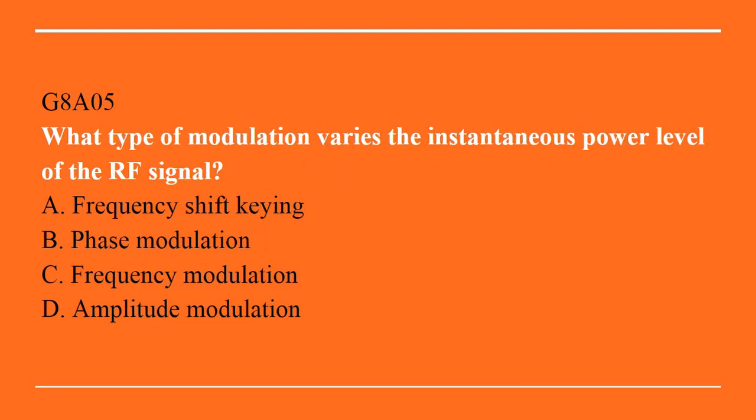G8A05: What type of modulation varies the instantaneous power level of the RF signal? A. Frequency shift keying. B. Phase modulation. C. Frequency modulation. D. Amplitude modulation. Answer is D. Amplitude modulation.